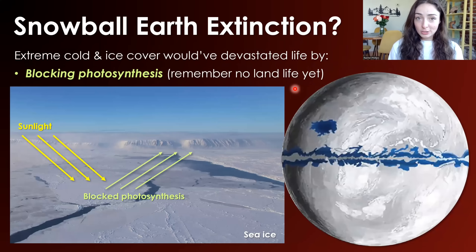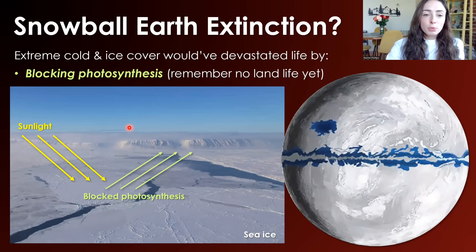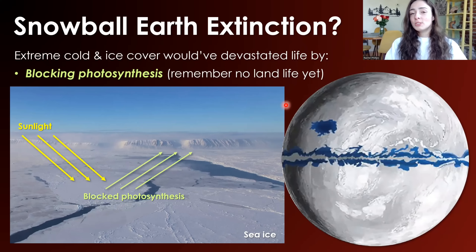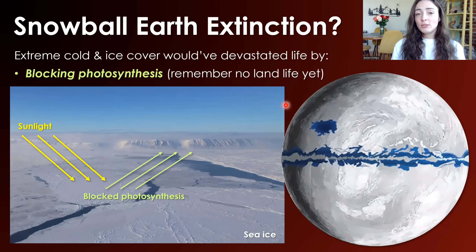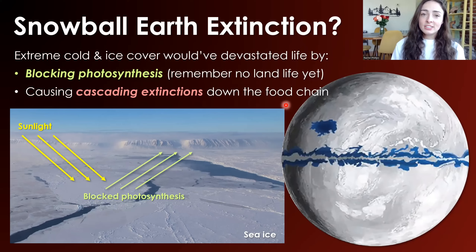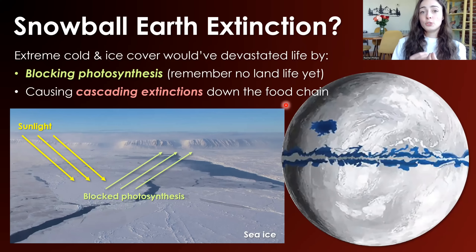One way Snowball Earth caused biological devastation was by blocking photosynthesis. The nearly complete ice cover of Earth's oceans would have blocked a lot of photosynthetic activity. And remember — we're thinking mainly of oceans here because there was really no land or terrestrial life yet. Ocean microbes like cyanobacteria and algae were the major photosynthesizers at the time. When ice covered the ocean, it made it really hard for sunlight to get through, causing cascading extinctions down the food chain. If the primary producers can't make food, that marine ecosystem dies.